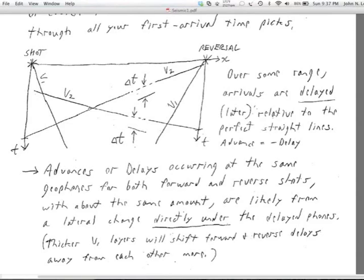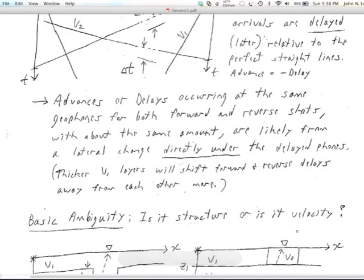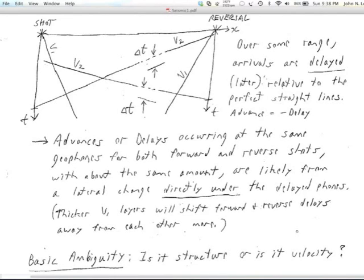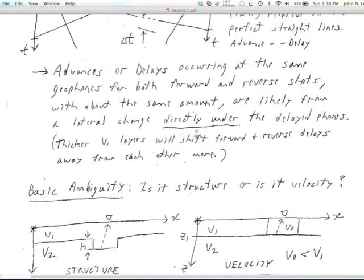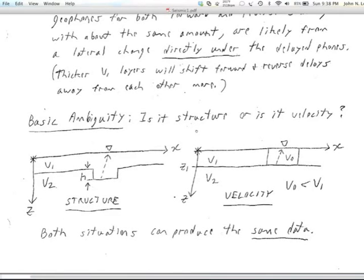So those delayed arrivals that are later relative to the straight lines are a good clue that there's some kind of lateral change. Now, we don't just have to have delay, we can also have advances. The arrival can appear out in front of the overall straight line. That would be called an advance, it's just a negative delay. Advances or delays that occur at the same geophones for both the forward and reverse shots with about the same amount are likely from a lateral change that's directly under the delayed geophones. If it's coming more from the depth of the refractor, and if it's fairly deep, then that will shift the delays in forward and reverse away from each other. They'll move away, the delayed parts will move to larger distances, and so they'll separate. This reverse one would move toward the left, the forward one would move to the right, and they'll kind of separate each other in here.